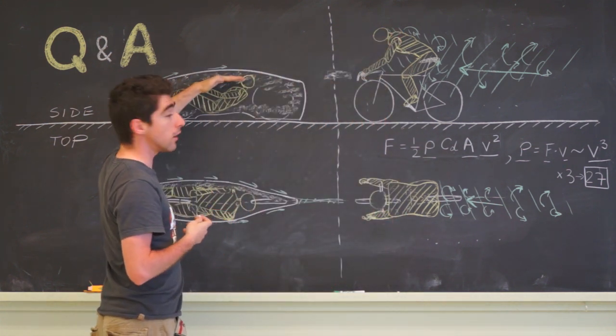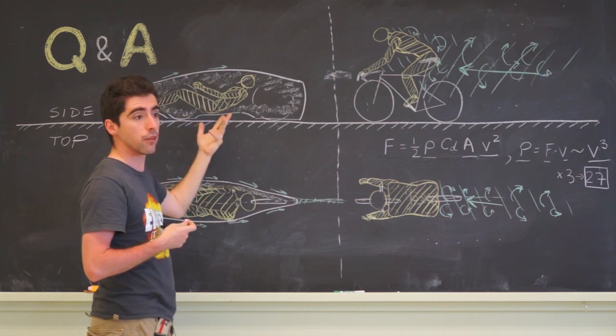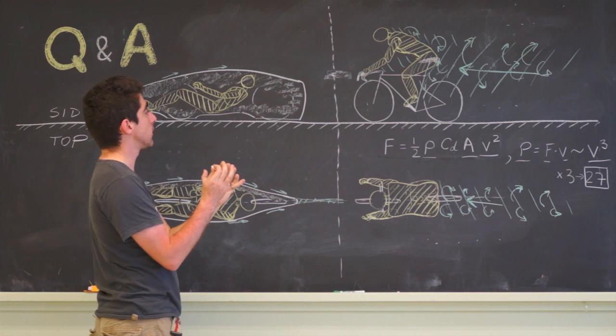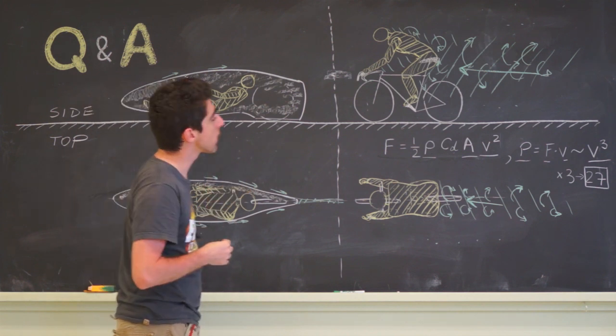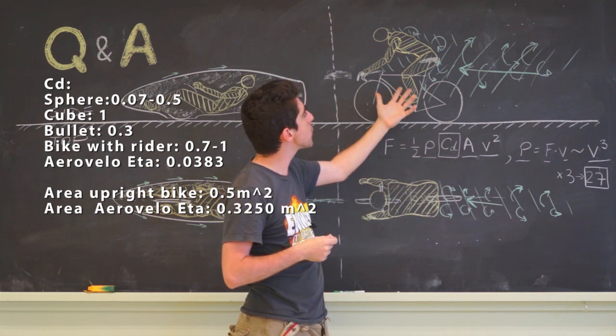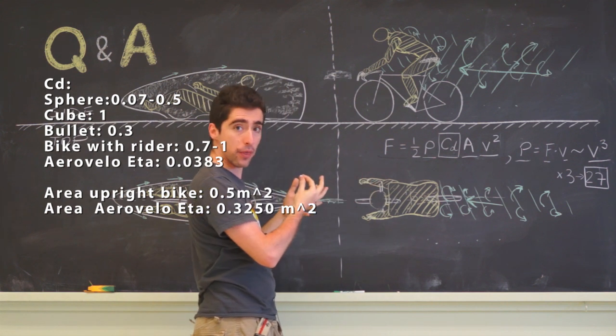But there is only so much you can do with the body shape. You can't make it as small as people want. But CD is the factor that tells us how good is our shape at not dragging along the air with it.